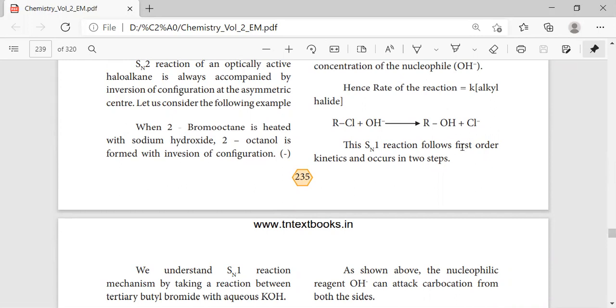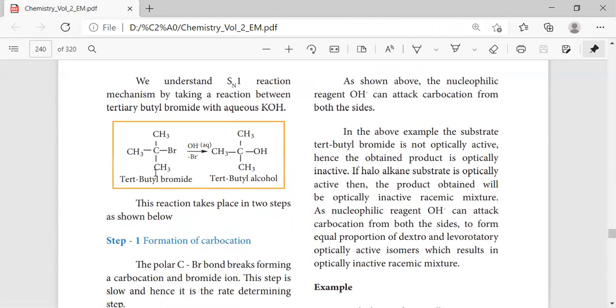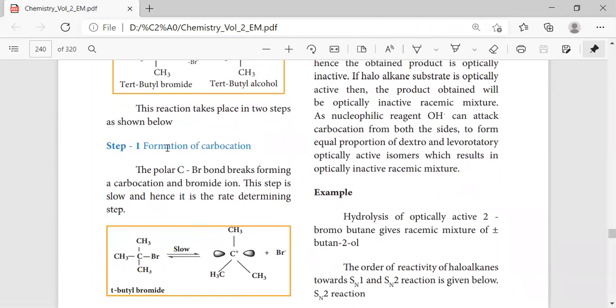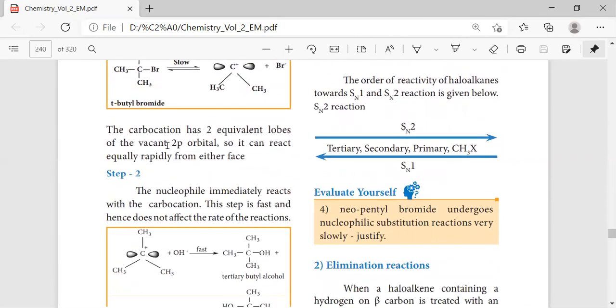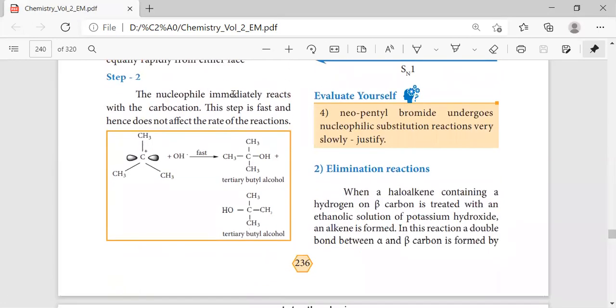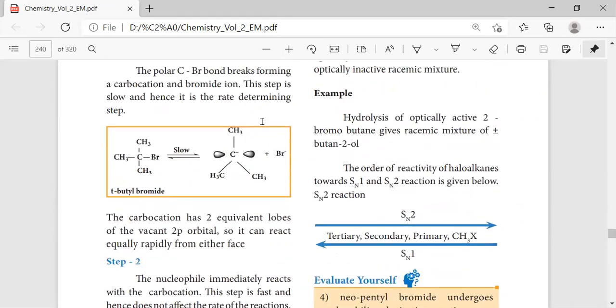We have tertiary butyl bromide. On treatment with hydroxyl group in the presence of alcoholic KOH, we get the product as tertiary butyl alcohol. This takes place in two steps: first step is the formation of carbocation and the second step is the attack of the nucleophile.